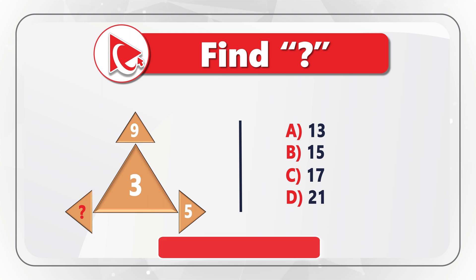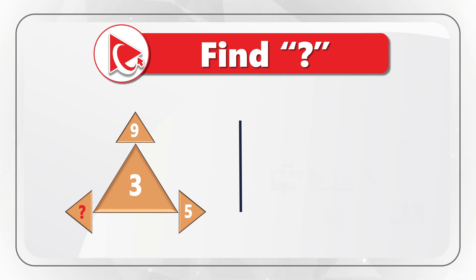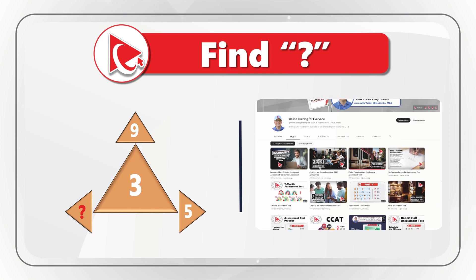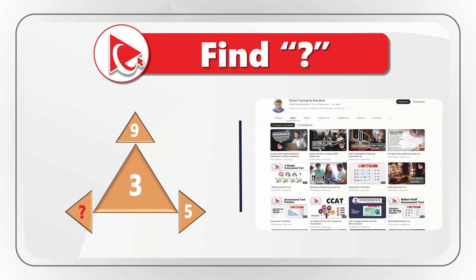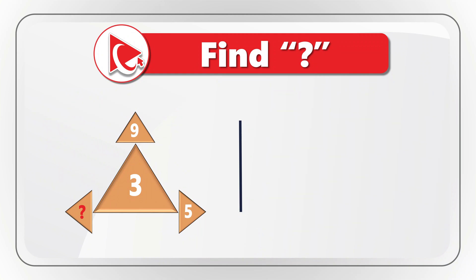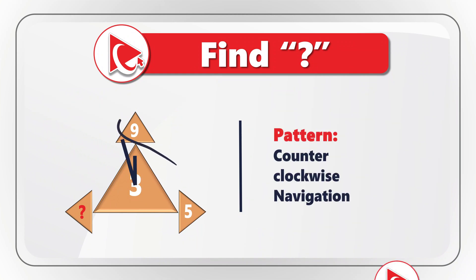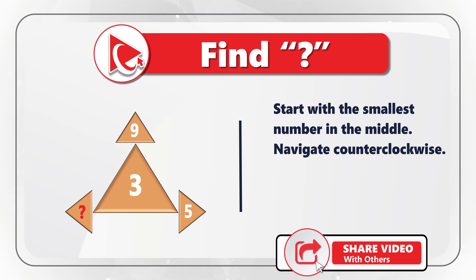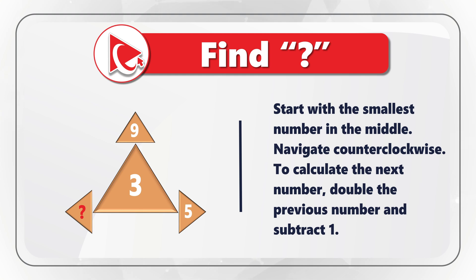If you have a better way to solve it, please post in comments. If you're a frequent visitor to this channel, you know the rule — to complete the calculations and solve the challenge, you need to understand the pattern. The pattern here is very simple: it's a counterclockwise navigation. When you do the calculations, you start with the smallest number three, then calculate five, then nine, and then the missing number.